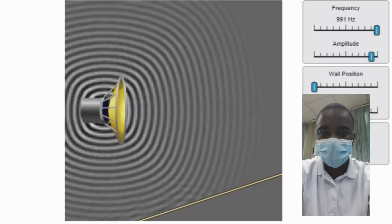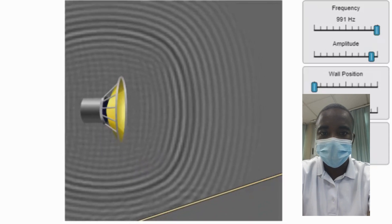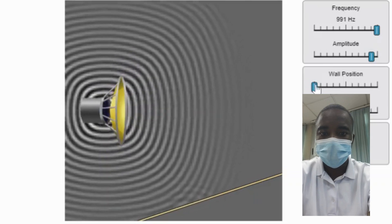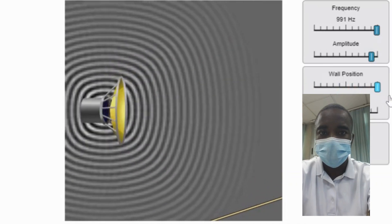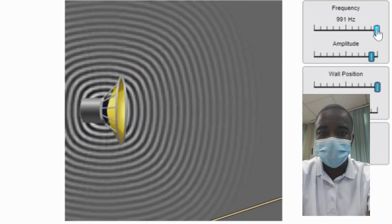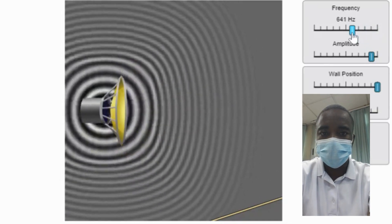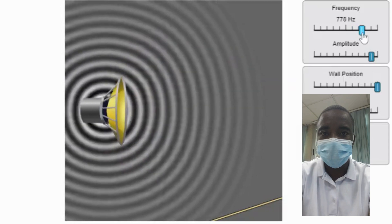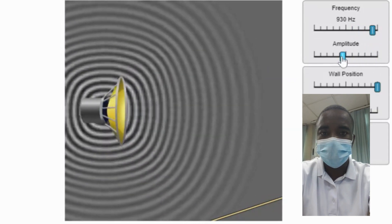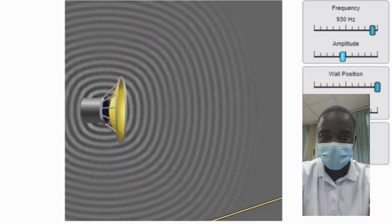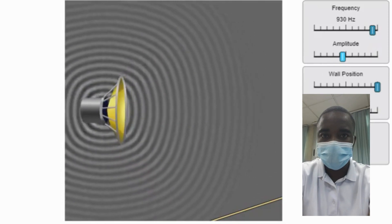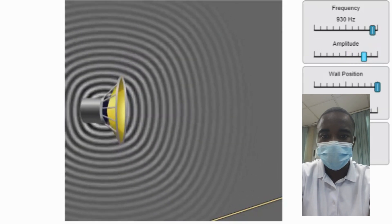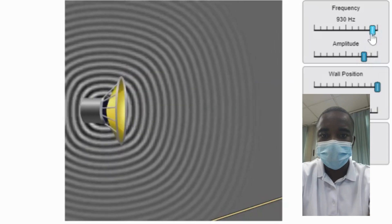The sound wave simulation is a valuable tool for teaching and learning about the properties and behavior of sound waves. By providing an interactive, visual, and flexible platform, it helps students understand the fundamental concepts of frequency, pitch, amplitude, volume, wavelength, speed, period, interference, reflection, and the role of the medium in sound propagation. Whether used in a classroom setting or for individual study, this simulation can significantly enhance the learning experience and build a strong foundation in the physics of sound. Through exploration and experimentation, students can gain a deeper appreciation for the complex and fascinating interactions between sound waves and their environment.